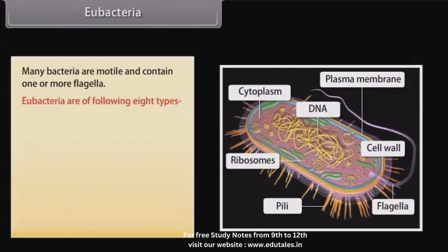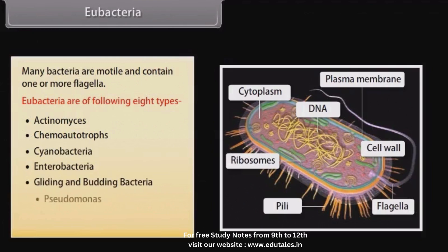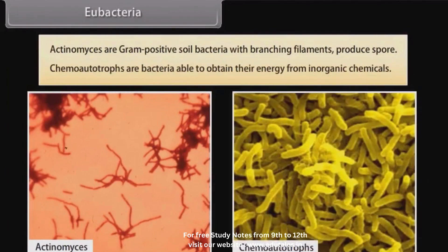Eubacteria are of the following eight types: Actinomyces, chemoautotrophs, cyanobacteria, enterobacteria, gliding and budding bacteria, Pseudomonas, Rickettsia and Chlamydia, and spirochetes. Actinomyces are gram-positive soil bacteria with branching filaments that produce spores. Chemoautotrophs are bacteria able to obtain their energy from inorganic chemicals.